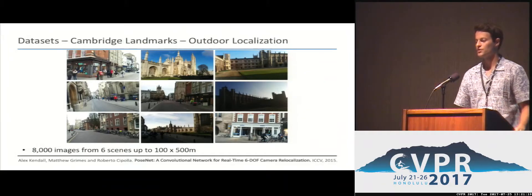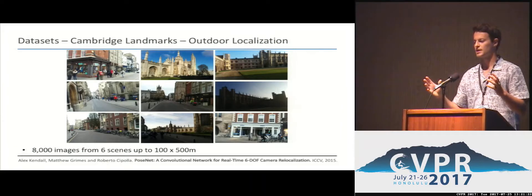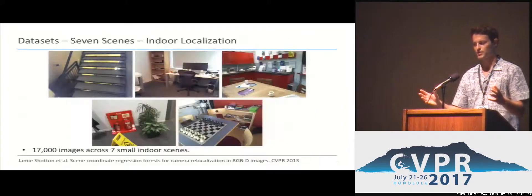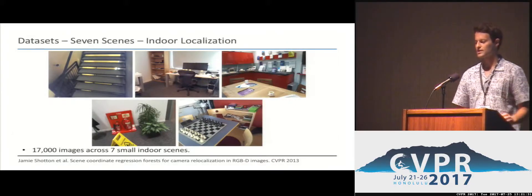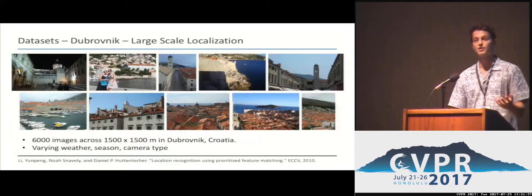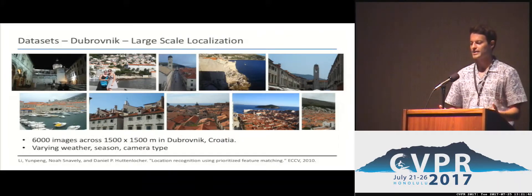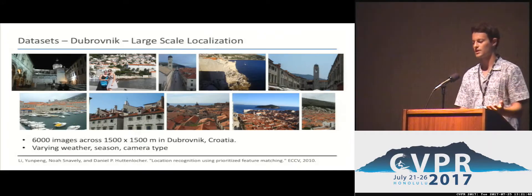We show our results on a few datasets. First, Cambridge Landmarks — a dataset across small street scenes with 8,000 images from 6 street-level scenes. The second is 7 Scenes by Shotton et al., which has 7 small indoor scenes. Finally, the most challenging is the Dubrovnik dataset, covering a small town in Europe with images from different camera types, different aspect ratios, and taken across all different seasons and weather conditions.